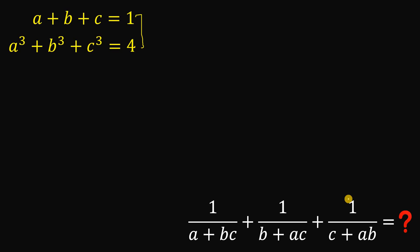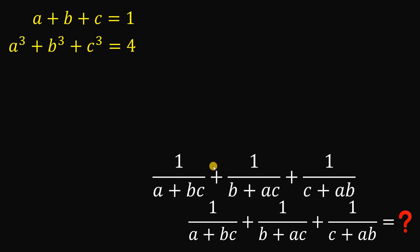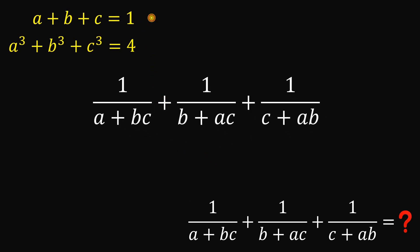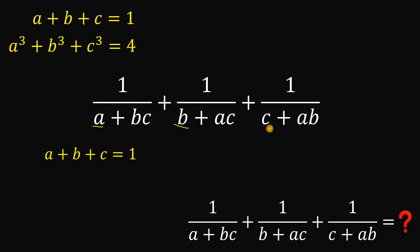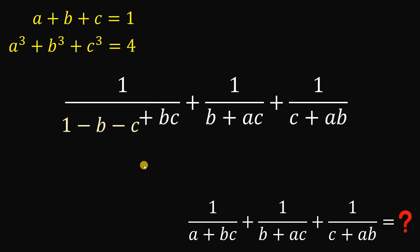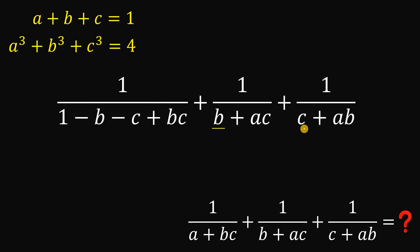Given this kind of scenario, the first thing we need to do is to simplify this expression that we want to evaluate. Using the first equation, A plus B plus C equals 1, we can get the value of each variable. For example, if we solve for A, we subtract B and C from both sides, so A equals 1 minus B minus C. Similarly, B equals 1 minus A minus C, and C equals 1 minus A minus B.